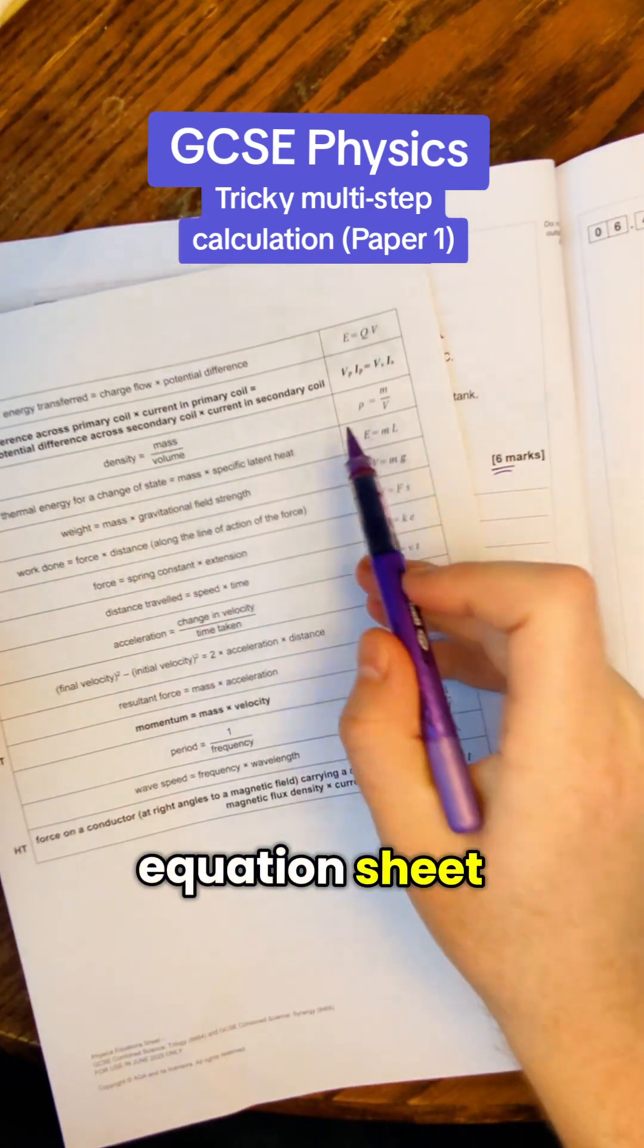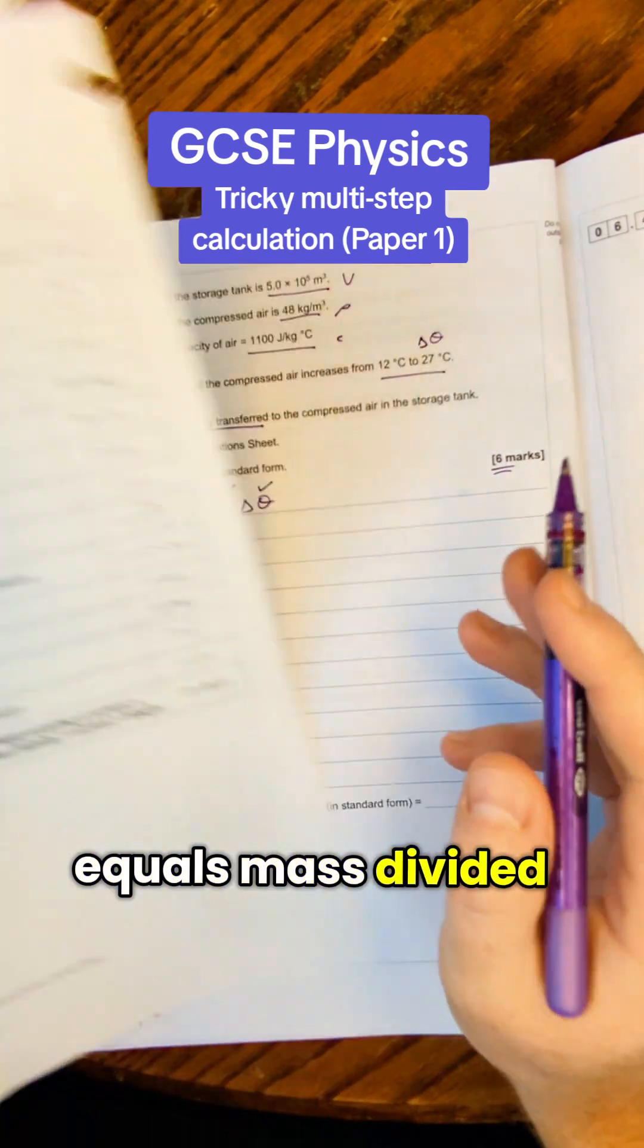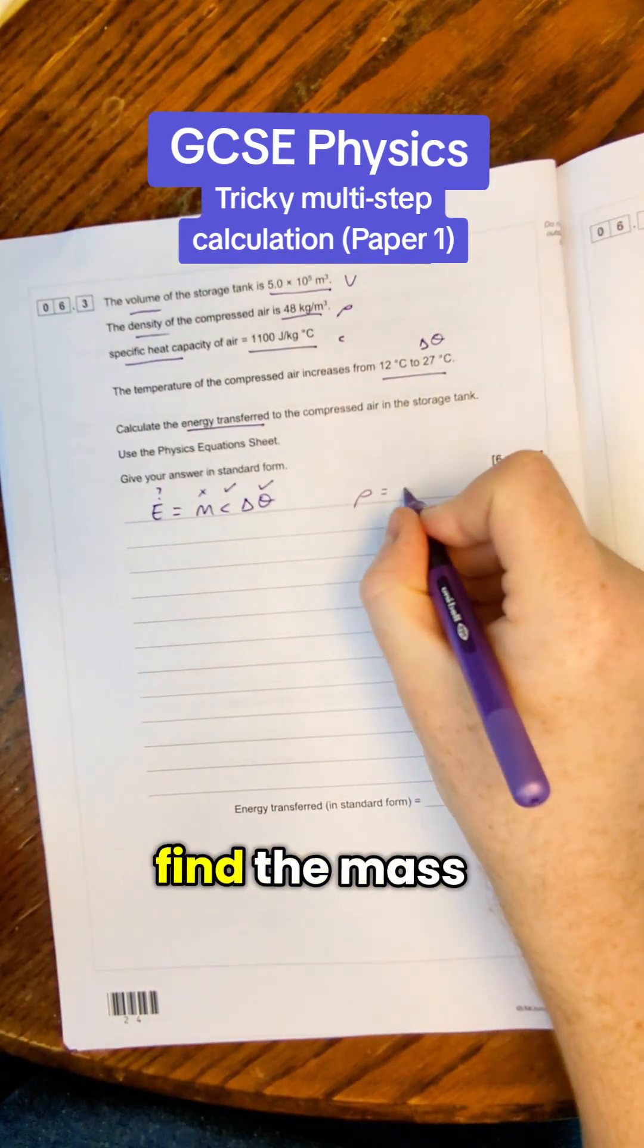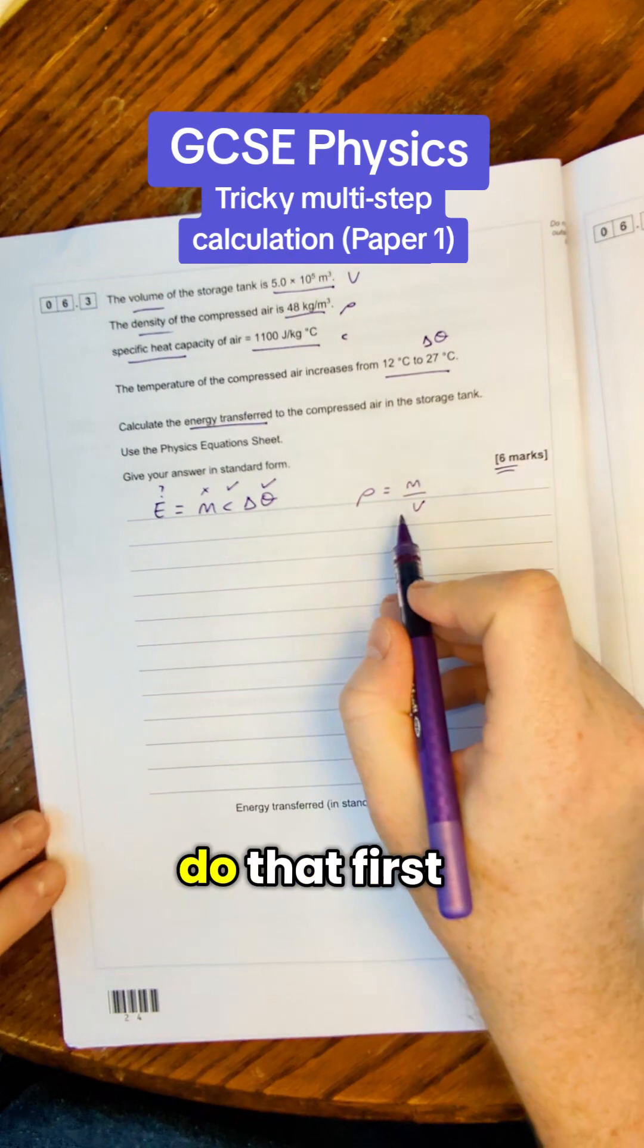If I look on the other side of the equation sheet I can see I've got density equals mass divided by volume. So I can use that to find the mass for this question. I'm going to do that first of all.